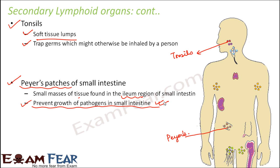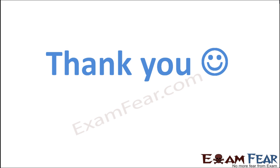With this, we have ended our discussion on immunity. We saw what immunity is, what the human immune system is, and the different types of immunity. It is very important to understand the concept of immunity. After this, we are going to talk about some very important and deadly diseases. Thank you.